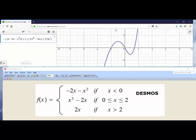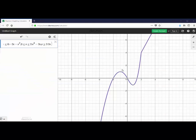So once we do that, Desmos will make that graph for us. So here is a graph of this piecewise defined function.